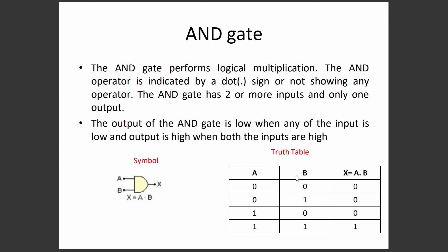For the AND gate truth table with inputs A and B, there are four combinations: 00, 01, 10, 11. Performing logical multiplication: 0·0=0, 0·1=0, 1·0=0, 1·1=1. The output is low when any one of the inputs is low, and the output is high when both inputs are high.